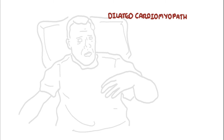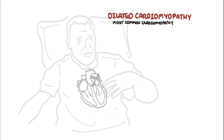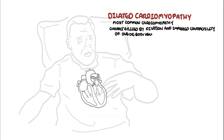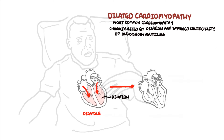Dilated cardiomyopathy is the most common type of cardiomyopathy and is characterized by dilation and impaired contraction of one or both ventricles. Blood fills the ventricles during diastole, but during systole there is impaired contraction. The dilated ventricles are unable to eject all the blood out of the heart, resulting in reduced ejection fraction.